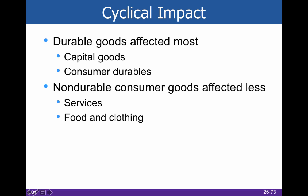Different things are impacted differently by recessions. Durable goods are going to be the most affected — capital goods and consumer durables like dishwashers and cars, which are things with a three-year-plus lifespan. These are fixable, so you can choose not to purchase them for a little while and just fix them instead. Non-durable consumer goods — food and clothing — when your clothes are worn out you have to buy new ones, when it's mealtime you have to eat. So non-durable consumer goods tend to be a little bit less affected by recession.